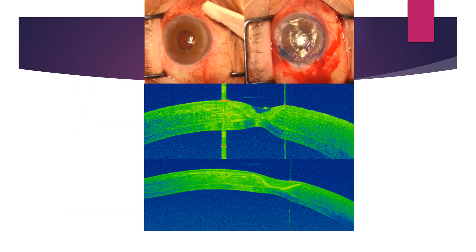As mentioned, thin manual DSAEK can also serve for tectonic purposes. You can see this case in which there was a corneal perforation with a hypotonic eye due to herpes virus, so I performed a tectonic DSAEK. You can see how well it is plugging the perforation in the top right picture. The middle picture is the OCT a few weeks after, showing epithelial filling of the perforation defect, and the bottom OCT scan a few months later shows further filling of the stromal defect with epithelium and a properly attached DSAEK providing good tectonic support.